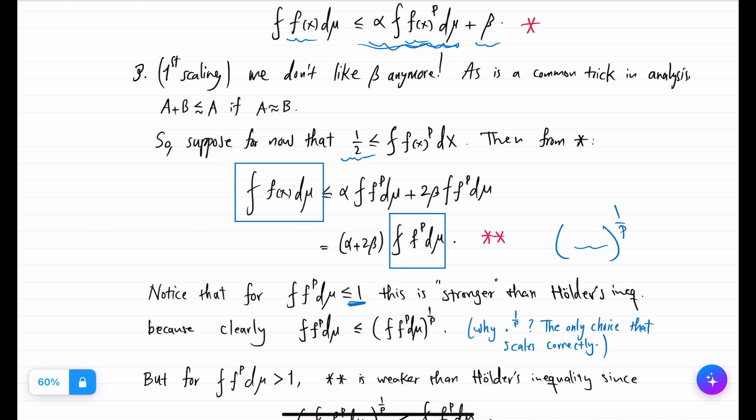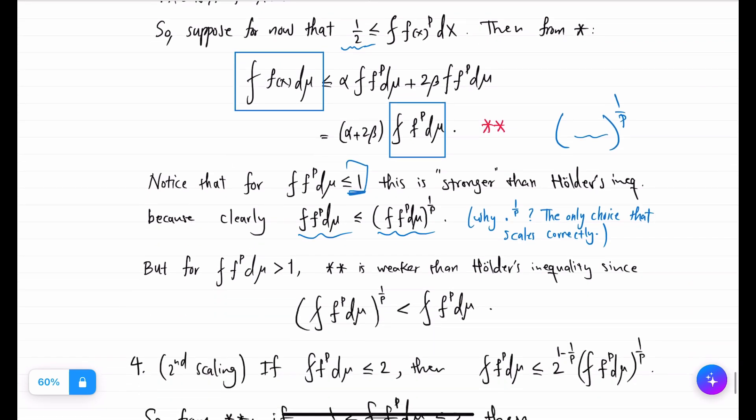Because raising a number to a power less than 1 makes it a bigger number. So this is bigger than that, provided that we are less than 1. So in the range of integral average of f to the p being between 1 half and 1, we actually have proven something better than Hölder's inequality.